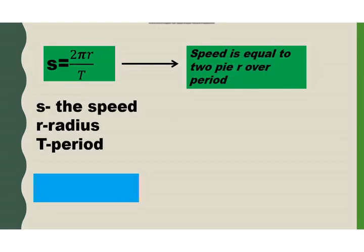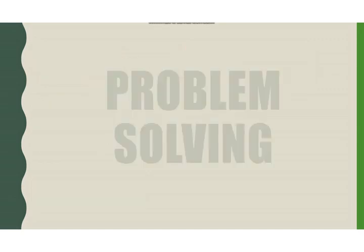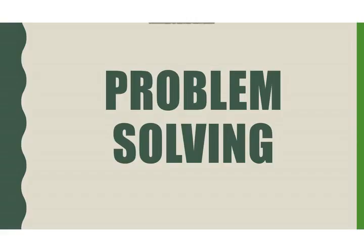The pi in the equation has the constant value of 3.14. When you encounter a problem where pi is not given, always remember that the value of pi is 3.14. The unit for speed is meters per second, for period we have seconds, and for radius is meter. Let's proceed to problem solving.